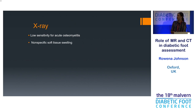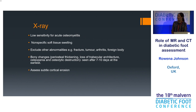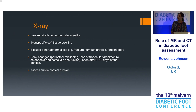Generally speaking, in the acute setting radiographs tend to be less sensitive. The soft tissue swelling is quite nonspecific. They're really helpful for looking for other features such as fracture, tumour, arthritis, and foreign bodies — we can completely walk past a foreign body on MRI. The bony changes tend to be delayed compared to MRI, though radiographs are fantastic for assessing cortical erosion and you can sometimes see cortical erosion on an x-ray before you can appreciate it on an MRI.